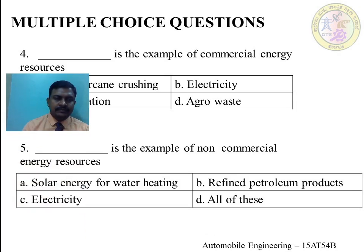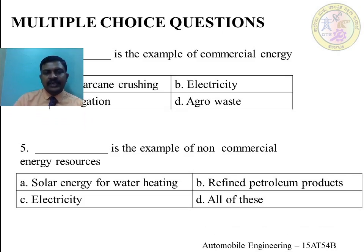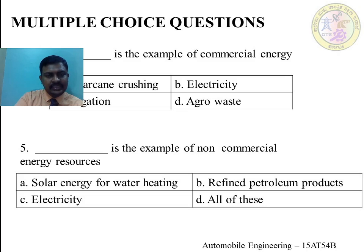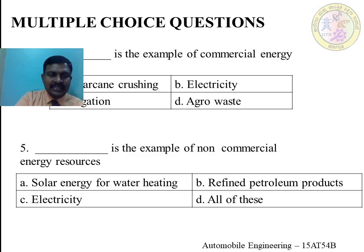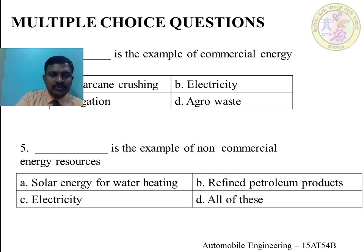The fifth question is: dash is the example of non-commercial energy resources — resources available for free with no price tag. The options are A, solar energy for water heating; B, refined petroleum products; C, electricity; and D, all of these. Refined petroleum products and electricity are not freely available in the market. The correct answer is A, solar energy for water heating, where the sun's temperature is used to raise the temperature of water — and that technology is available for free.